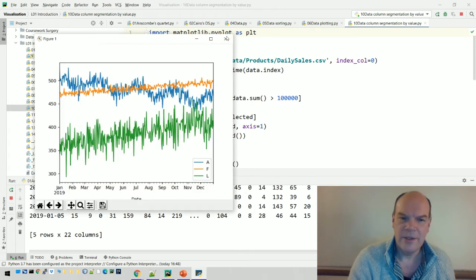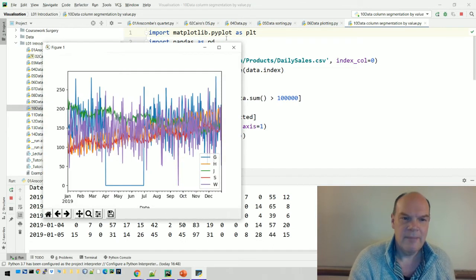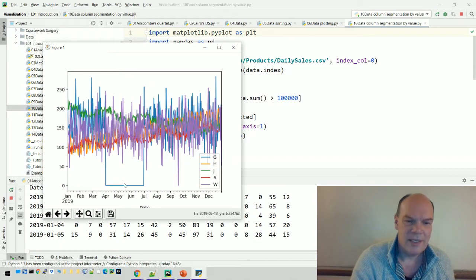So there's the top three selling products, daily sales for each of them. So you can see there somewhere between 500 and 350 a day. These are the median products. Somewhere between 250 and sort of 50, but you can see there's a place here where G drops to zero.